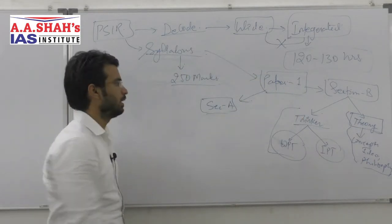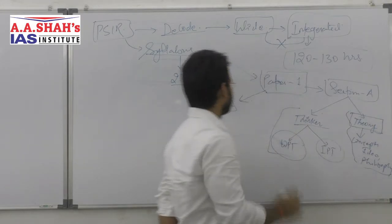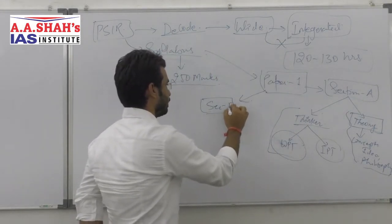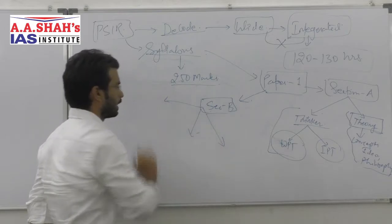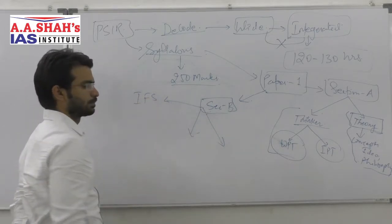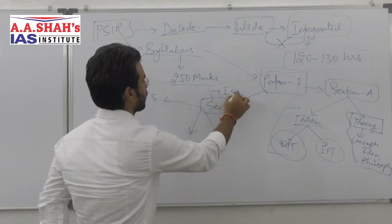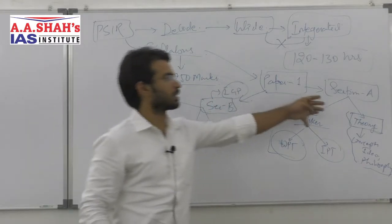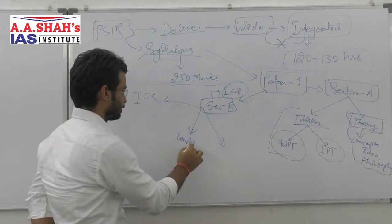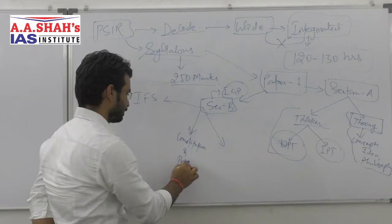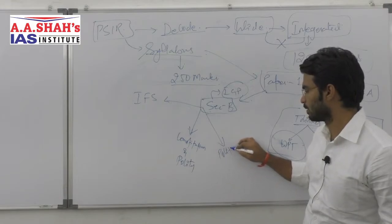Section B of Paper 1 is titled 'Indian Government and Politics.' It can be divided into three parts: Indian Freedom Struggle, Constitution and Polity, and Politics in India.